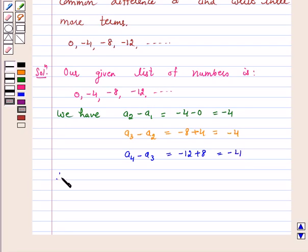Therefore, aₖ₊₁ - aₖ is the same every time. That is, it is constant.